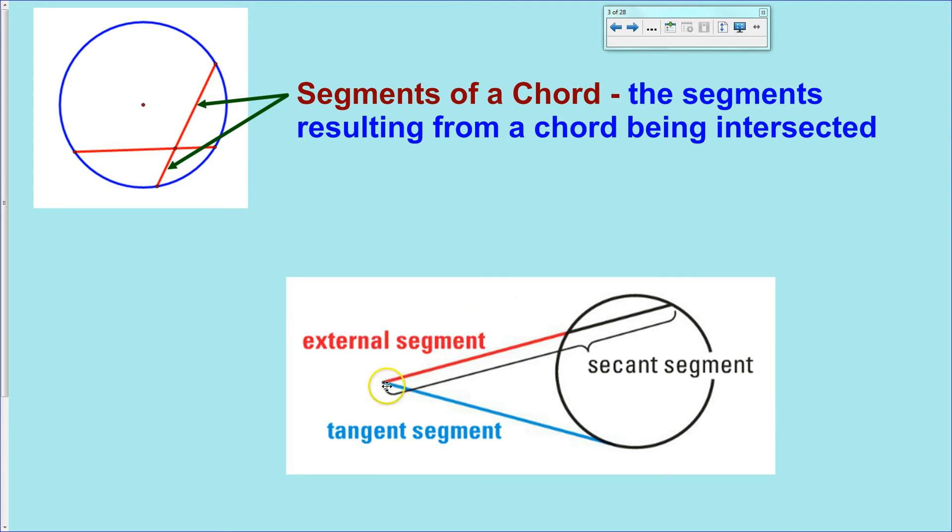External segment, which is a secant line, but just the external part of the secant line. In fact, just an external segment of it. And then a tangent segment, which seems pretty obvious, going from a vertex of an angle to the point of tangency. And then the secant segment itself is not talking about the entire secant line, which would continue on forever in both directions, but the secant segment would just be that segment of it that goes from the intersection to the far edge of the circle.